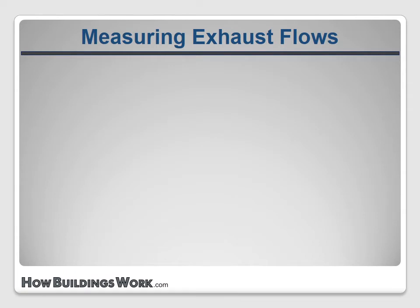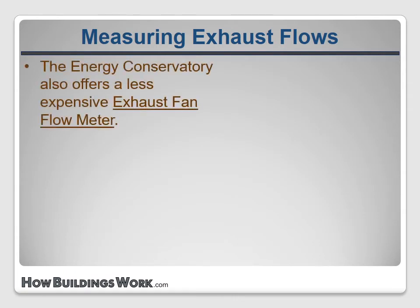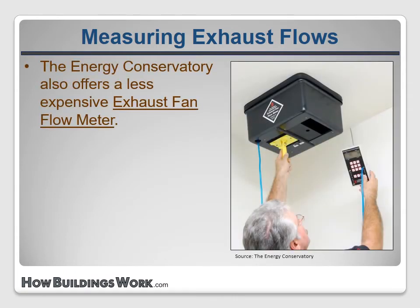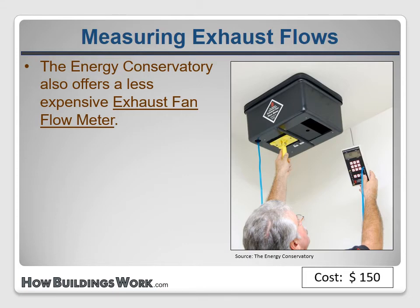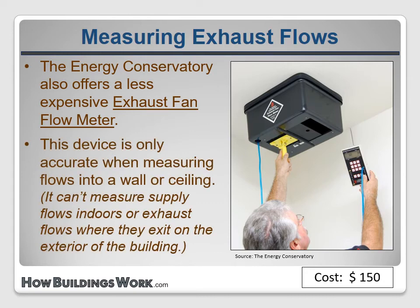The Energy Conservatory also offers a lower-cost alternative they call an exhaust fan flow meter. It's basically a plastic box with a gasket and an adjustable opening, and it works in conjunction with a digital pressure and flow gauge like the DG700. If you already own the gauge because it came with a blower door or duct blaster, you can buy the plastic box for $150. It's lightweight and easy to use, but it's only accurate for measuring exhaust air flowing into it — it won't give you a good reading for air coming out of a register.